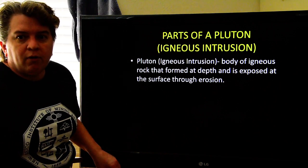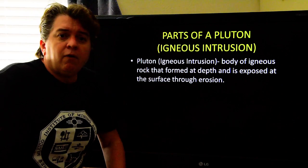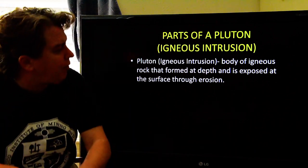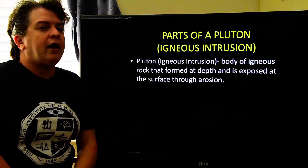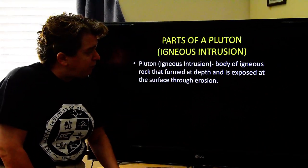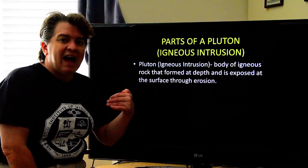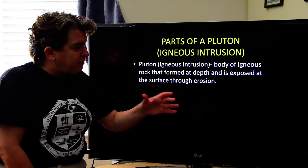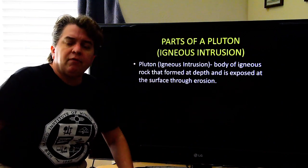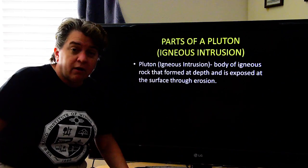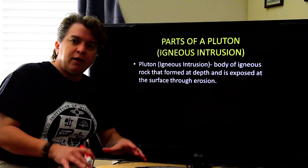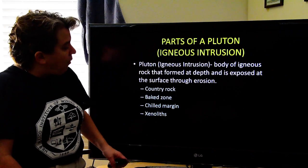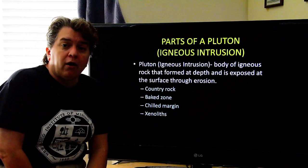Now let's go over a few parts of an igneous intrusion. An igneous intrusion, or pluton — those are synonyms — is a body of igneous rock that forms at depth, cooling and crystallizing underground. These can be exposed at Earth's surface through erosion later on. A good example is Enchanted Rock out west of here in Hill Country, which is a body of igneous rock that formed many kilometers underground but was later exposed at the surface by weathering and erosion.